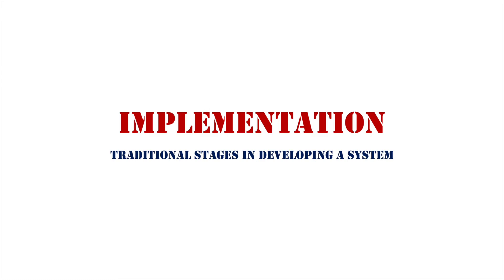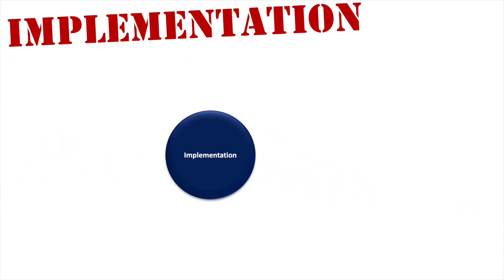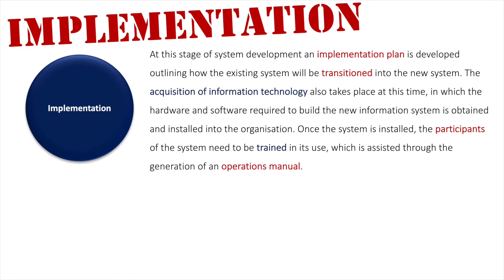We are going to take a look at the implementation stage of the traditional approach to system development. As we can see here, it's the second last stage of the actual approach, so we're getting towards the end of it now. At this stage of system development, an implementation plan is developed outlining how the existing system will be transitioned into the new system — removing the existing system and putting in the new system that we've been developing.